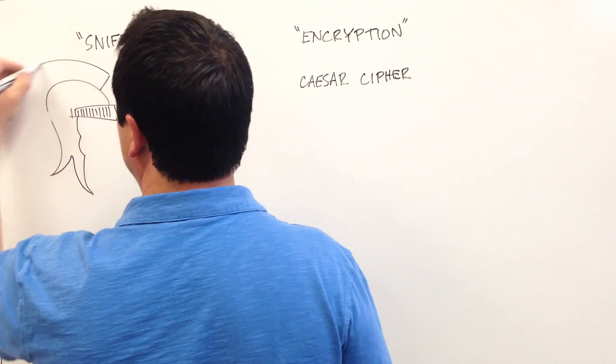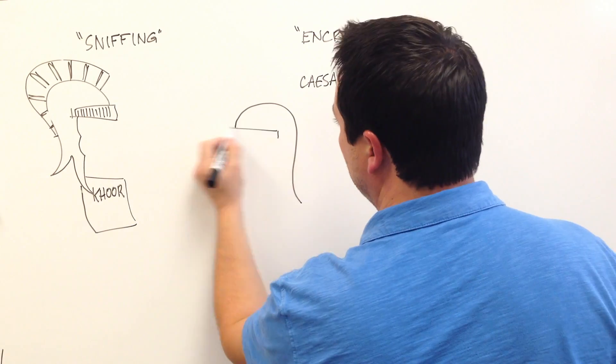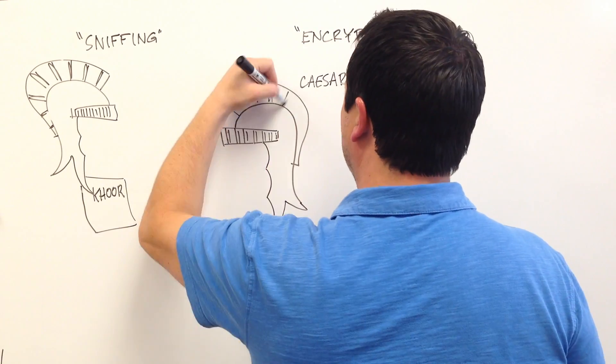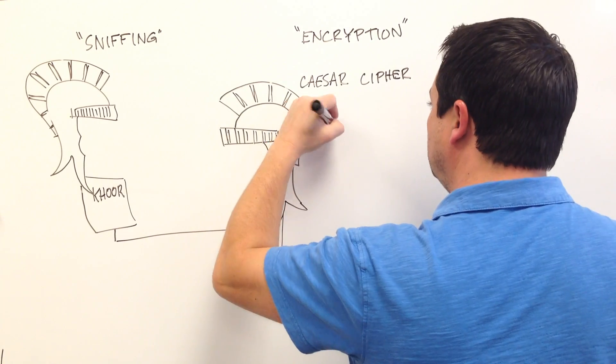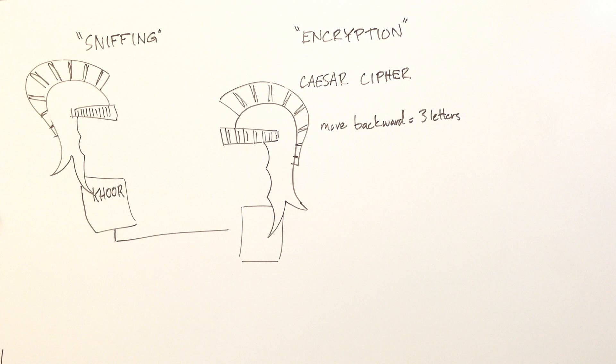The sender would encrypt the message according to a secret procedure. While the message was in transit, anyone who saw it wouldn't know what it meant. The receiver, however, knew the procedure was to move a certain number of positions down the alphabet for every letter so he could decrypt it.